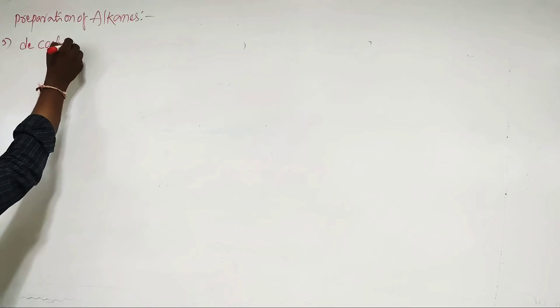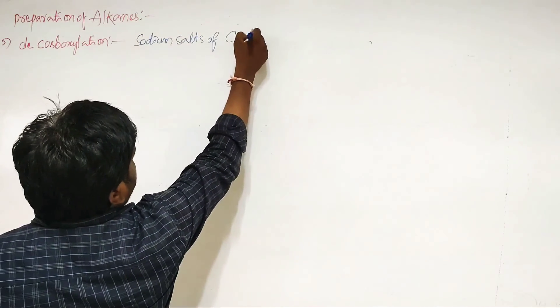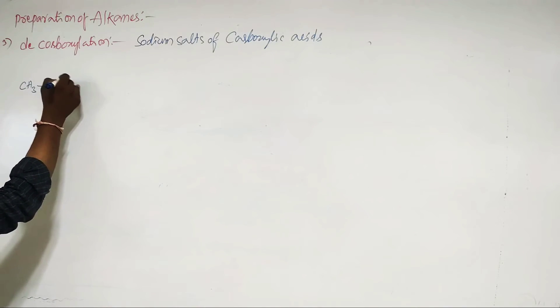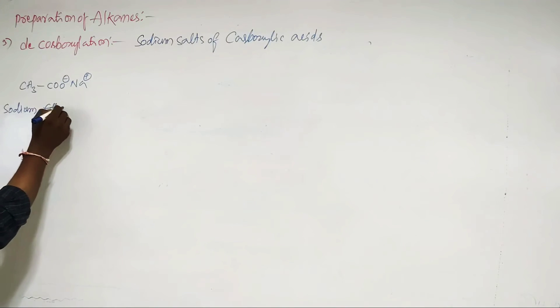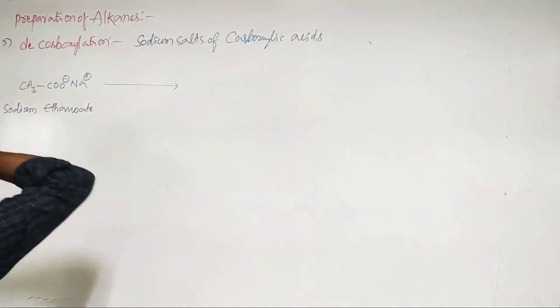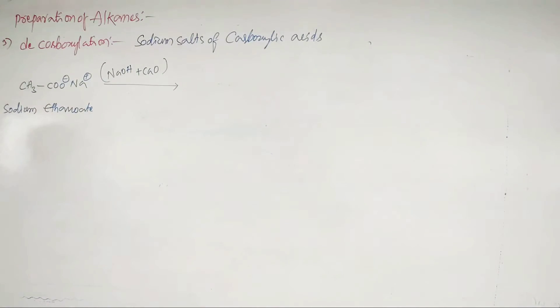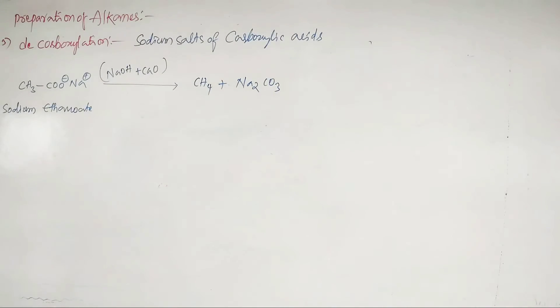Decarboxylation: sodium salts of carboxylic acids are used in this method. For example, sodium acetate (CH3COONa, also called sodium ethanoate) on heating with soda lime — which is a mixture of NaOH (sodium hydroxide) and CaO (calcium oxide) — gives CH4 plus Na2CO3. The CO2 is removed, and this process is called decarboxylation.